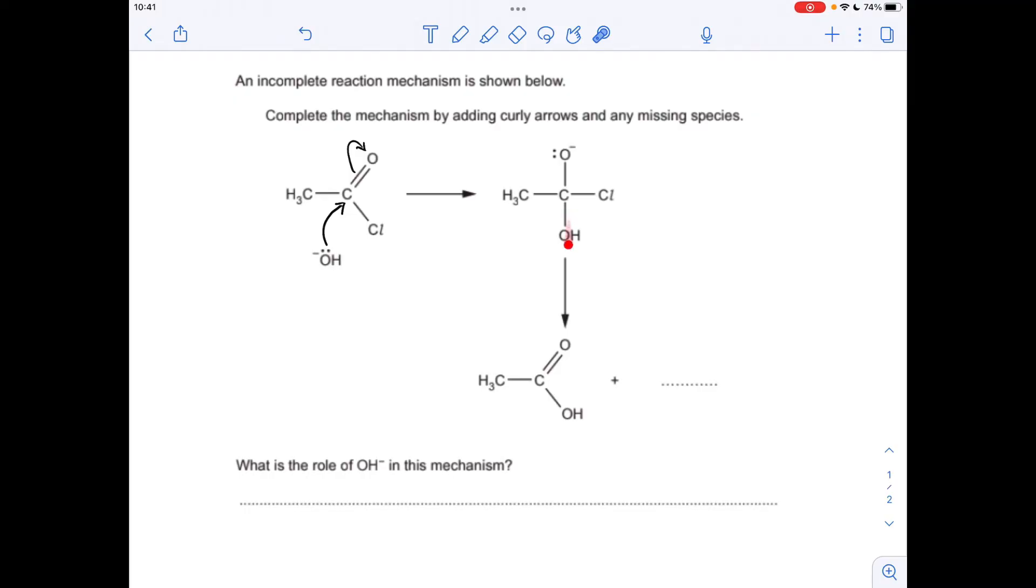Moving on to step two now. So what's changed here? Well, the OH group is still there, so nothing's happening here. The O minus single bond of the carbon is now a C double bond O, so we're going to bring the pair of electrons in to reform that double bond.